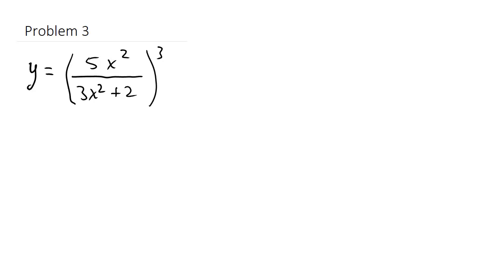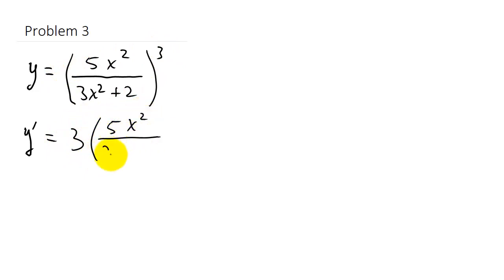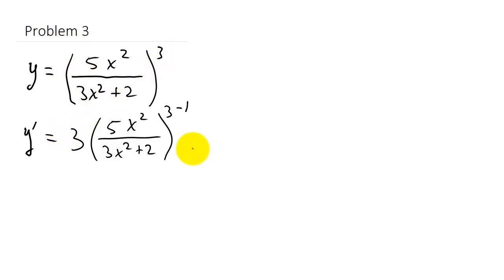Now let's look at another one. We have y equals 5x squared over 3x squared plus 2, all of that cubed. So the derivative y prime: we bring the 3 down in front, times 5x squared over 3x squared plus 2 raised to the 3 minus 1, which is squared. Then it's times the derivative of what's inside the parentheses, and to take that derivative we're going to have to use the quotient rule.